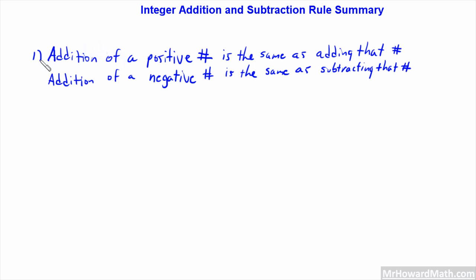So we'll call this Rule 1 and Rule 2 to keep things straight. I'm going to underline 'positive' and 'adding' for Rule 1, and underline 'negative' and 'subtracting' for Rule 2. I'll put a big plus sign to indicate these two are both addition rules.